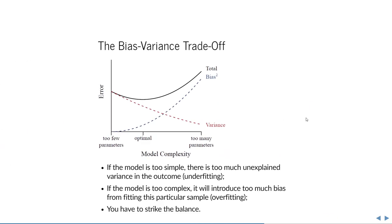The goal is to strike a balance: we don't want to overfit by having too many parameters, and we don't want to underfit by having too few. If we underfit, we don't explain any of the variance in the outcome. If we overfit, we pick up on the error and follow peculiarities of this particular sample that have nothing to do with the overall trend in the population. Now we're going to talk about how to strike this balance.